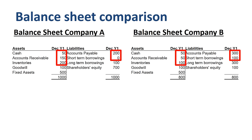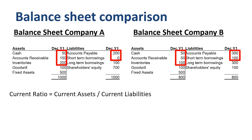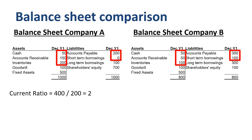A useful financial ratio in this area is the current ratio. Simply divide the current assets by the current liabilities. For company A, 400 divided by 200 is 2. For every dollar of current liabilities, there are 2 dollars of current assets — a safe position from the perspective of business continuity.